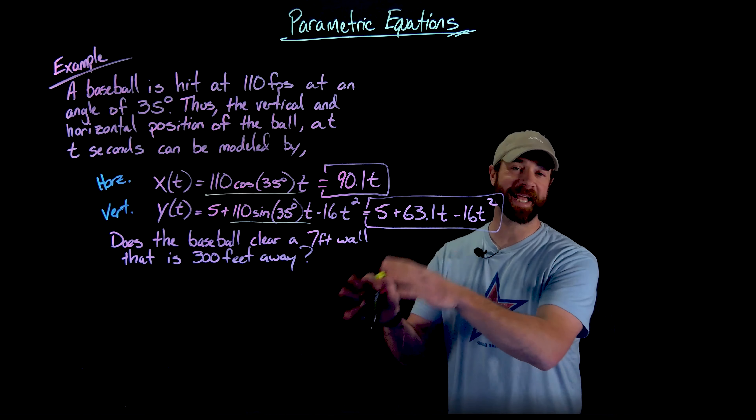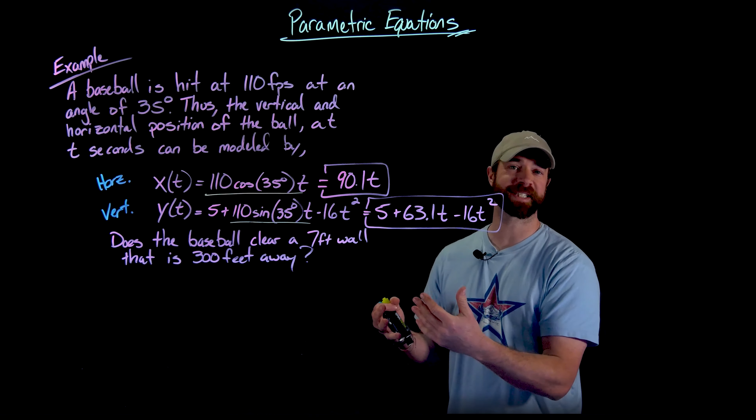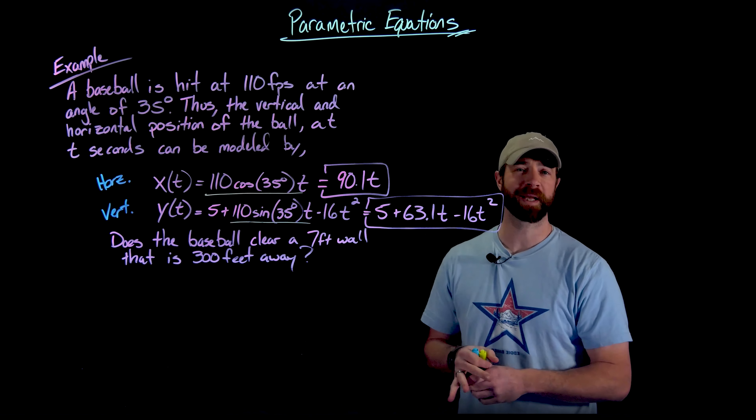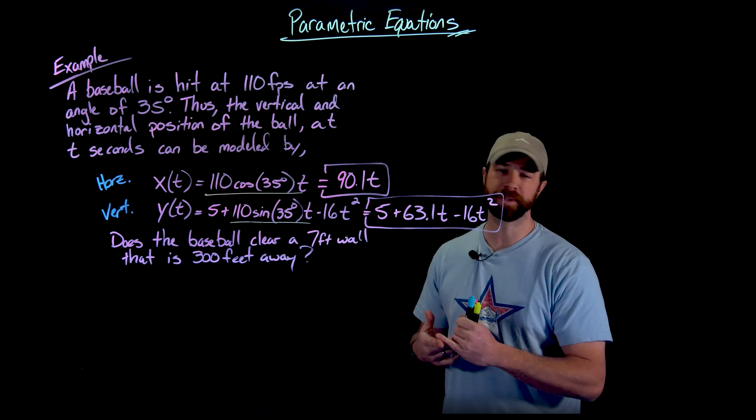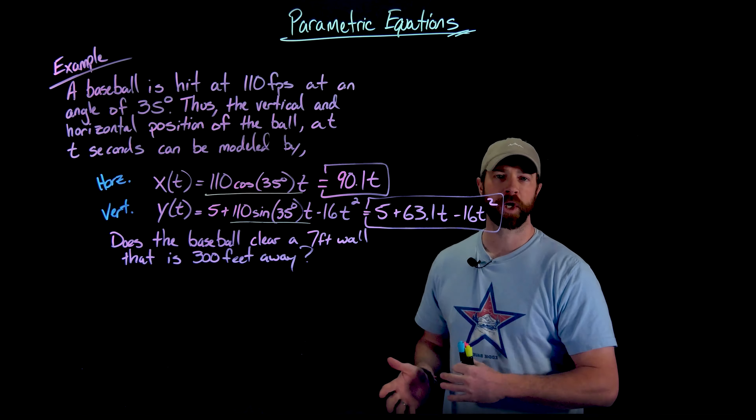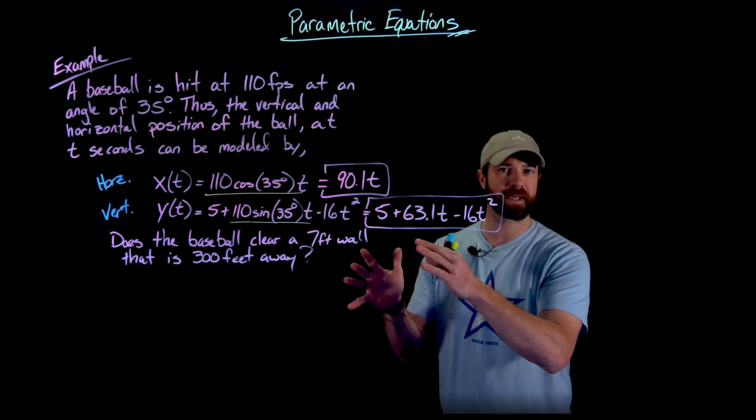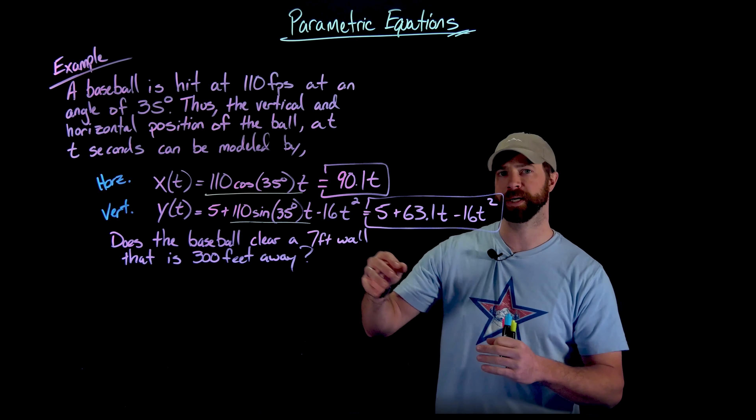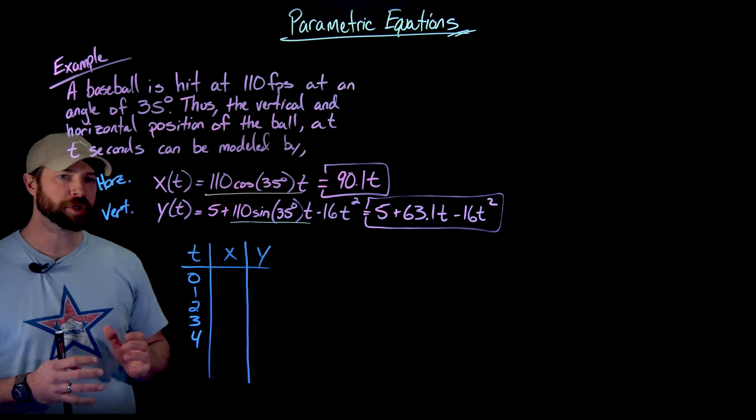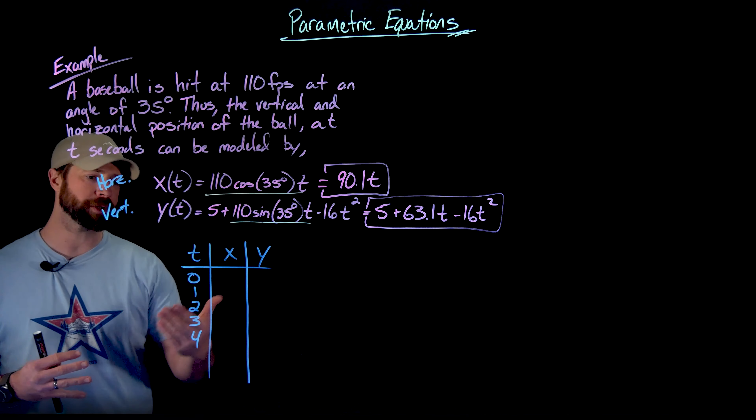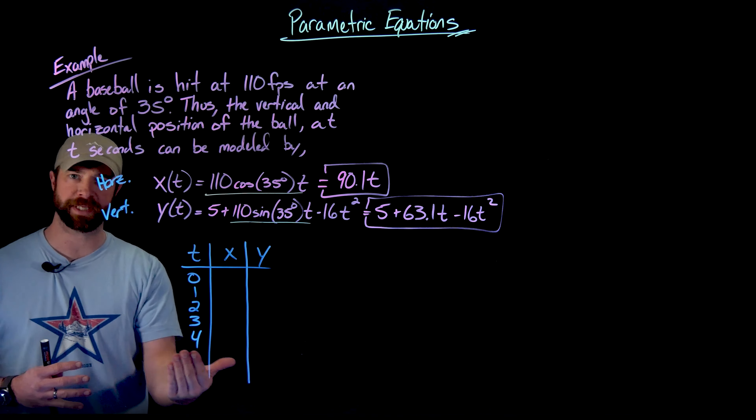So I am going to answer the question being asked, does it clear this seven foot wall that's 300 feet away? But given this is our first example, I want to play around this a little more. What I'm going to do now is make a table of values, look at the sketch of the plane curve described by these parametric equations and make a couple important points before we go back and answer this question. So to create a table of values, what I'm going to do is just take some values of T.